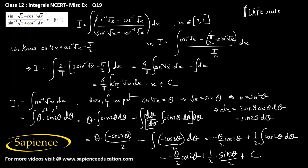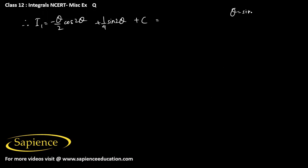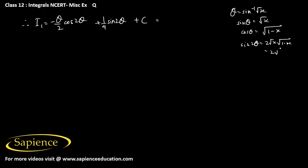So theta equals sin inverse root x, and sin theta equals root x. Therefore cos theta equals root over 1 minus sin squared theta, which is root over 1 minus x. So sin 2 theta equals 2 root x into root over 1 minus x, or 2 into root over x minus x squared. And cos 2 theta equals 1 minus 2 sin squared theta, which equals 1 minus 2x.